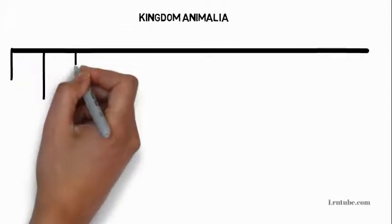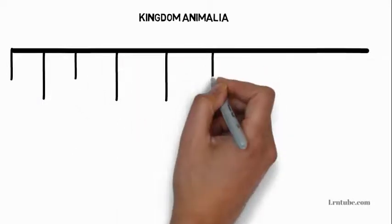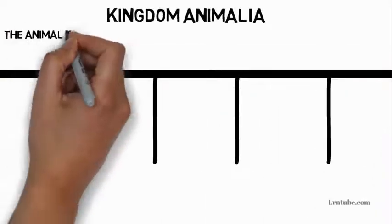Hello and welcome to this video. We're going to talk about Kingdom Animalia. Before we get started, I would really advise you to watch our previous video on the classification of living things, which talks about binomial nomenclature and a general introduction to classification. The animal kingdom has eight phyla.